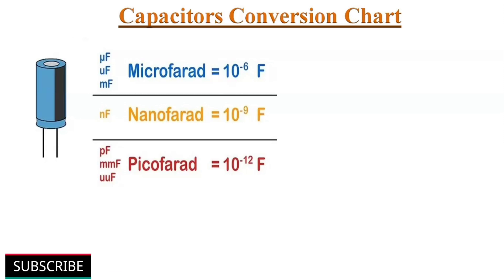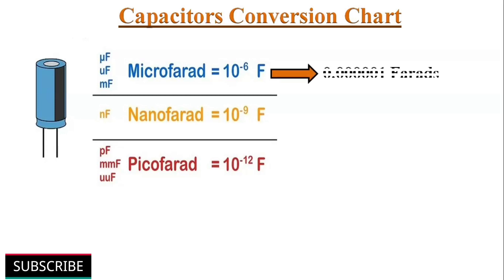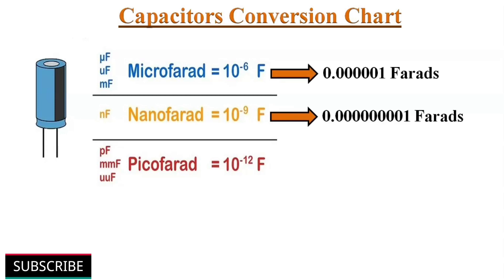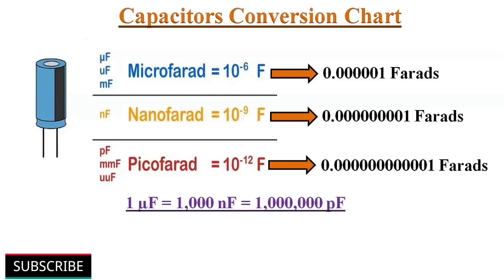Capacitance is measured in Farads. Since Farad is too large for practical purposes, microfarads, nanofarads and picofarads are generally employed. One microfarad equals 1000 nanofarads, which equals one million picofarads.